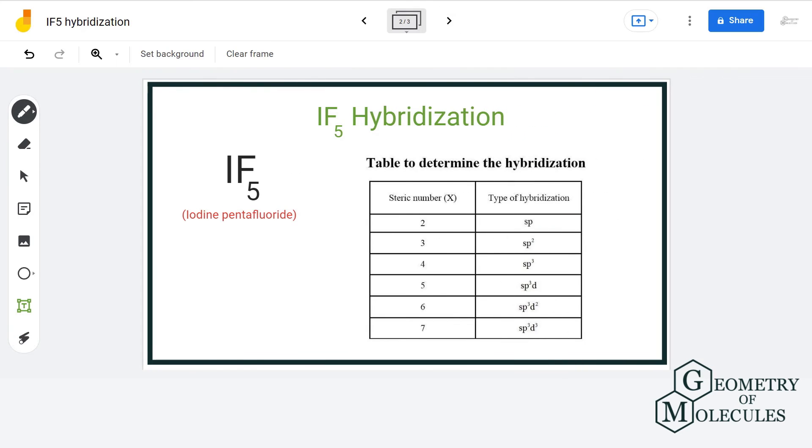Let us add the two. We have 5 sigma bonds plus one lone pair of electrons, which gives us a steric number of 6. This corresponds to sp3d2 hybridization.